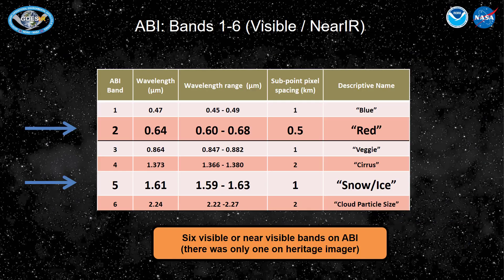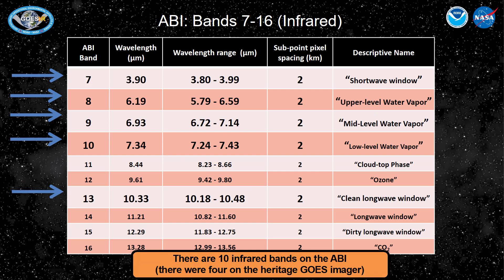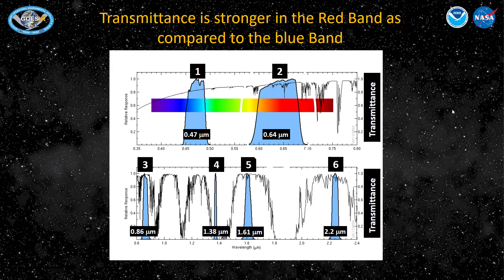Here's a chart that shows the visible and near visible, or near infrared, channels that are present on the ABI. The two channels you'll be seeing in this training are the red visible at 0.64 micrometers, and the 1.6 micrometer snow ice channel that is so important if you want to view glaciation. Here are the infrared bands on the ABI that we'll be discussing. Here's another way to view the six visible and near infrared bands.